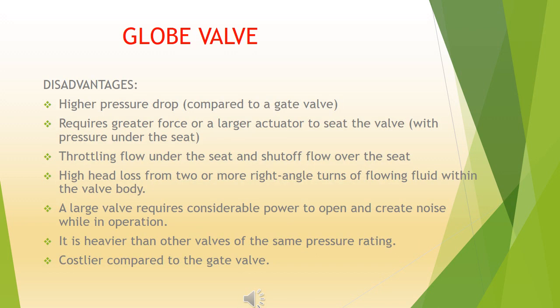Disadvantages of globe valves: higher pressure drop compared to a gate valve; requires greater force or a larger actuator to seat the valve with pressure under the seat; throttling flow under the seat and shut-off flow over the seat; high head loss from two or more right angle turns of flowing fluid within the valve body; a large valve requires considerable power to open and creates noise while in operation; it is heavier than other valves of the same pressure rating; and it is costlier compared to the gate valve.